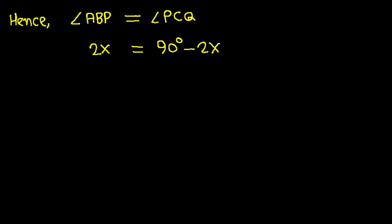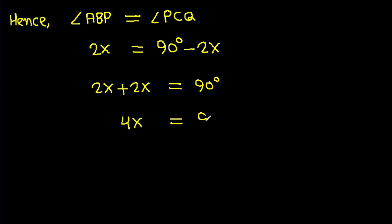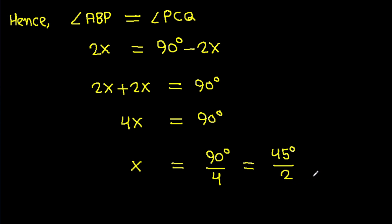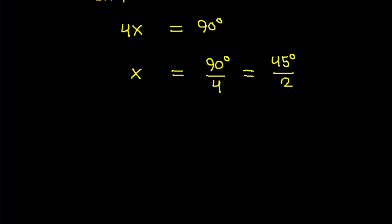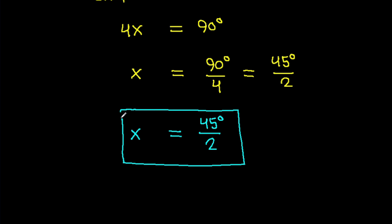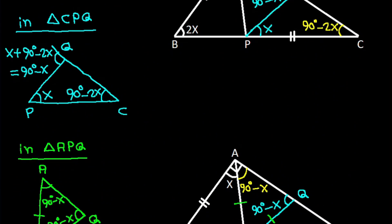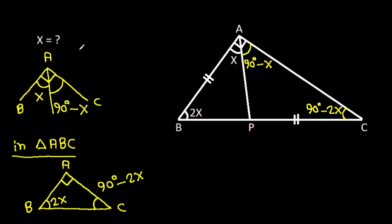So 2x plus 2x equals 90 degrees, giving 4x equals 90 degrees, and therefore x equals 90 degrees over 4, which is 45 degrees over 2. So x is 45 degrees over 2, that is 22.5 degrees.